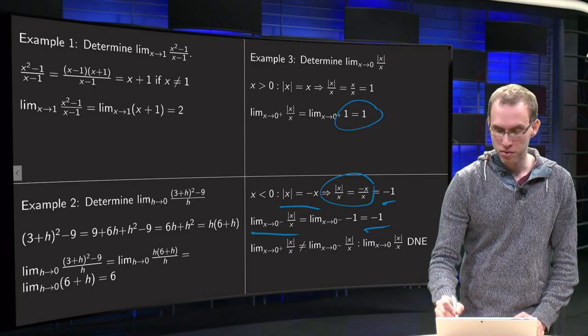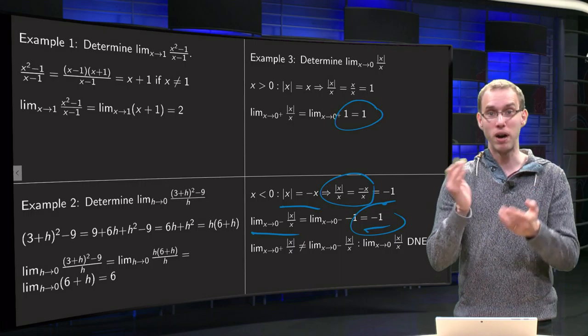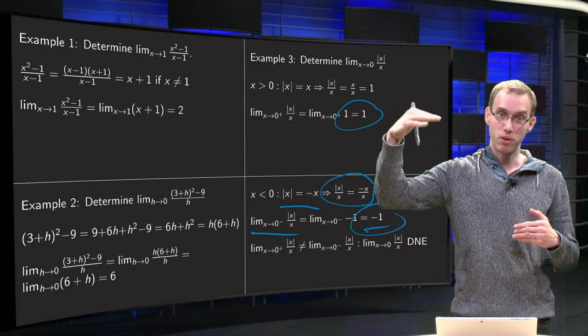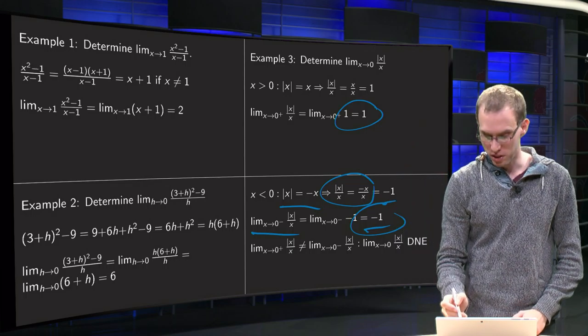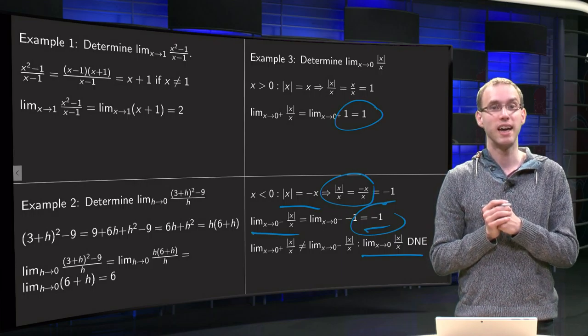Limits going from above and from below, they are not the same. They are 1 and minus 1. So, the first limit approaches 1, the other one minus 1, so they do not match up, which means that our limit x to 0 of x absolute value over x does not exist.